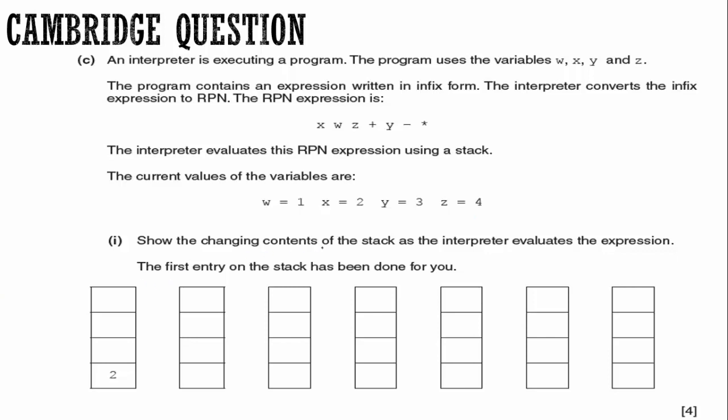Then it says, show the changing contents of the stack as the interpreter evaluates the expression. The first entry in the stack has been done for you. Okay. So we take a look. And the first thing we want to do is we want to count the number of characters, which is one, two, three, four, five, six, seven. And they have given us one, two, three, four, five, six, seven. Perfect. We have exactly what we need. Now you'll notice what they did not do for you was they did not write down this expression.